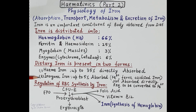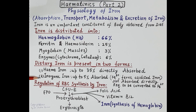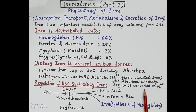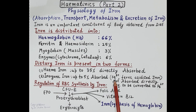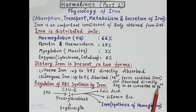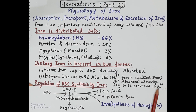In green leafy vegetables such as spinach, iron is present in the inorganic form, which is in the ferric oxidized form — that is, iron is present as Fe3+. This Fe3+ ferric form is not absorbed directly and must be converted to the ferrous form, Fe2+. It is the ferrous form which is absorbed in the intestinal mucosal cells.